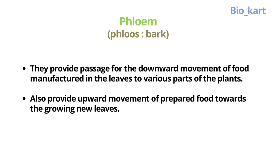Now let's talk about the second type of conducting tissue, which is phloem. It has been coined from the word 'phloos' which means bark. It helps in the transportation of the food which has been prepared by the leaves, providing passage of the downward movement of food manufactured in the leaves to the various other parts of the plants.